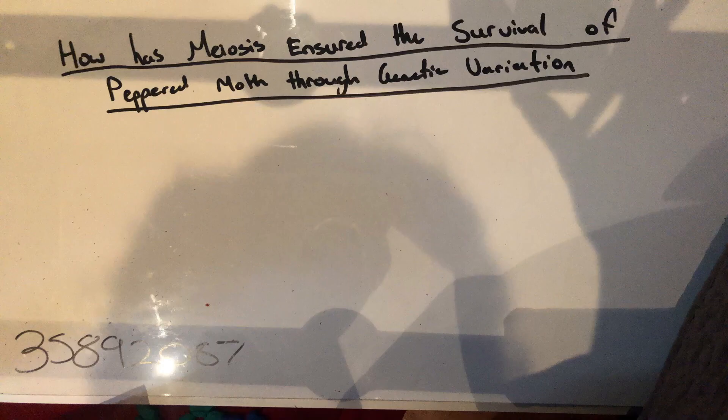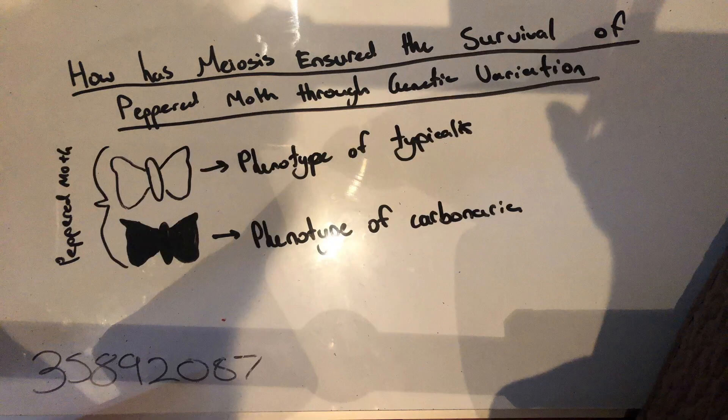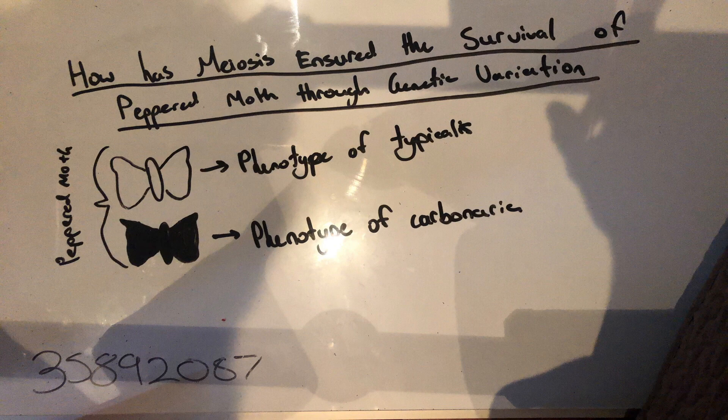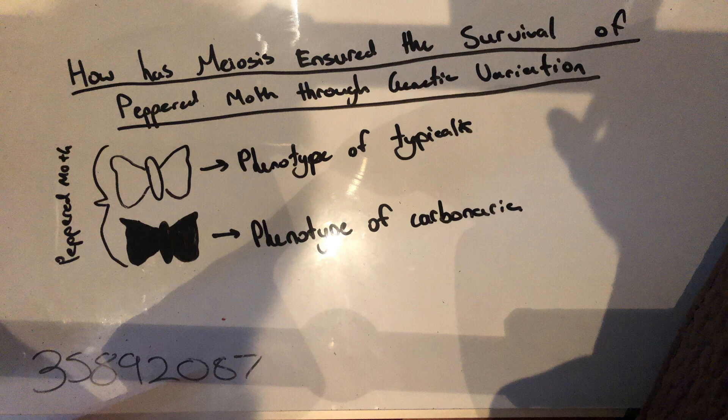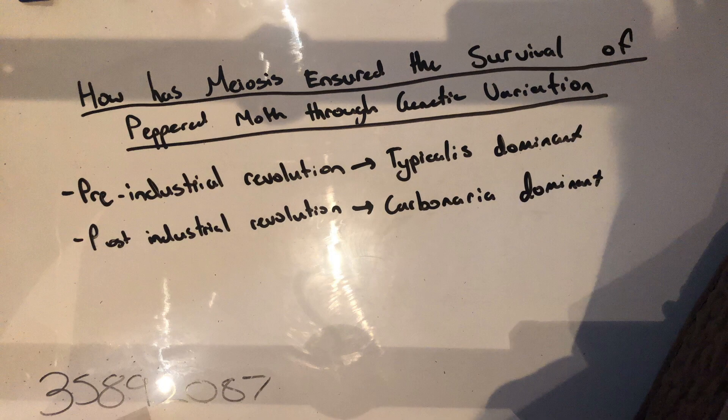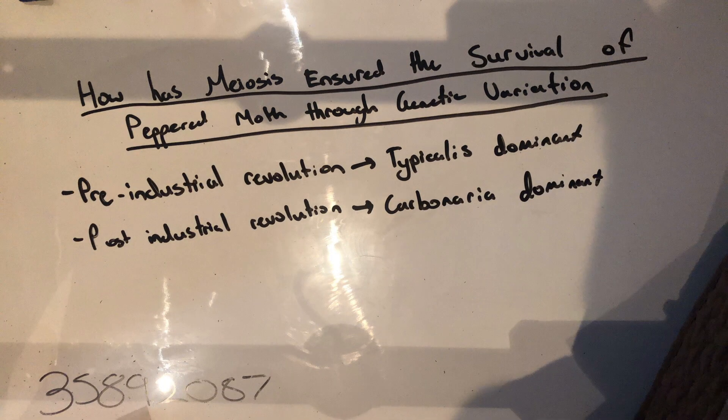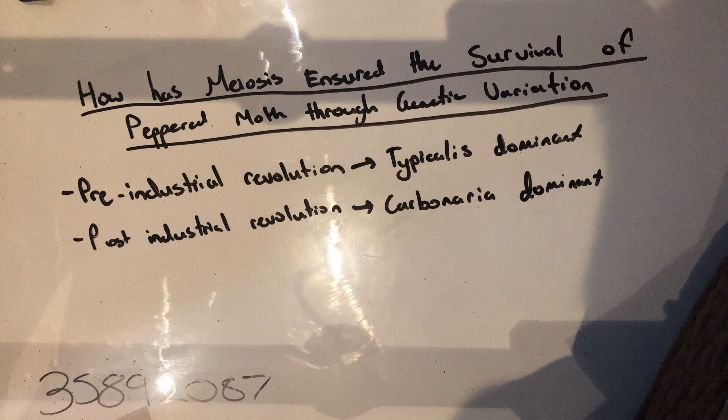How has meiosis ensured the survival of peppered moths through genetic variation? Meiosis has contributed strongly to the survival of the peppered moth through genetic variation. Through the expression of the melanic phenotype carbonaria, the peppered moth has been able to camouflage with its darker surroundings much more effectively than the moth with the phenotype typicalis. This has allowed the moth to be more camouflaged from the selective pressure of birds.